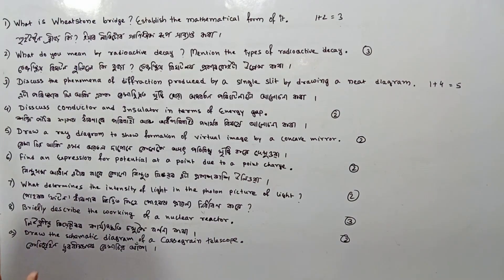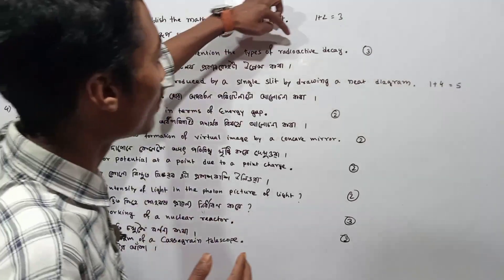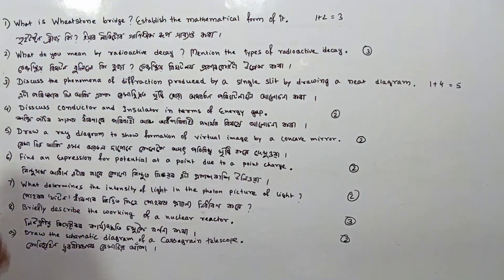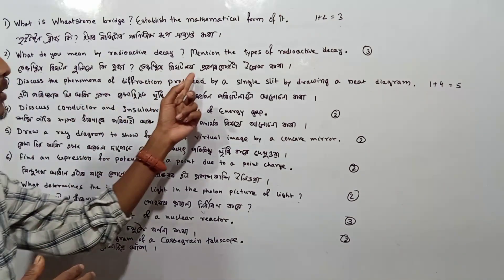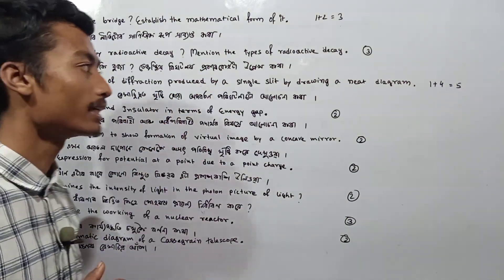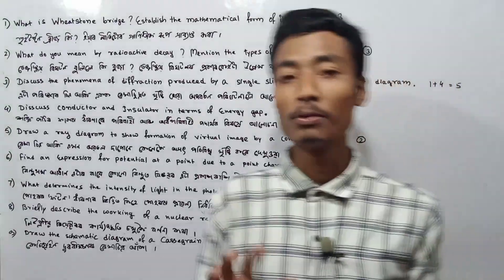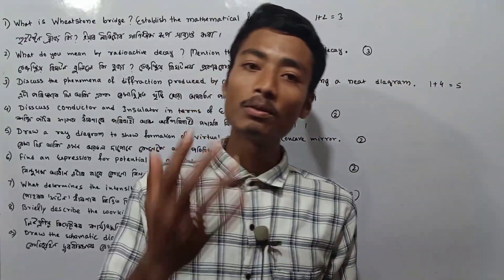Next question: What do you mean by radioactive decay? Mention the types of radioactive decay. This will carry 3 marks. Radioactive decay — what is it, and how many types of radioactive decay are there? Check and mark, and get the information from this video.